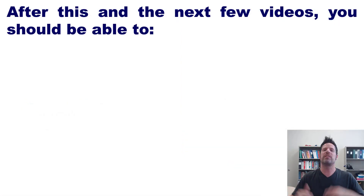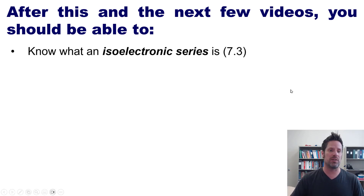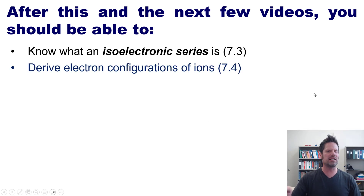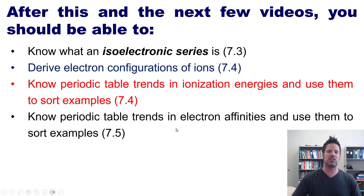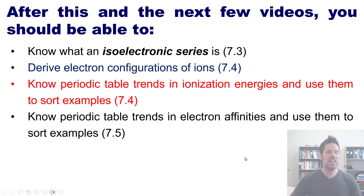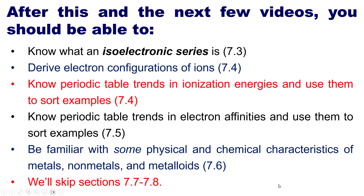After this video and a few that follow — all linked in the video description — you will gain the following skills: knowing what an isoelectronic series is; deriving electron configurations of ions; knowing periodic table trends in ionization energies and electron affinities; and being familiar with physical and chemical characteristics of metals, non-metals, and metalloids. We will skip sections 7.7 and 7.8 from our text.